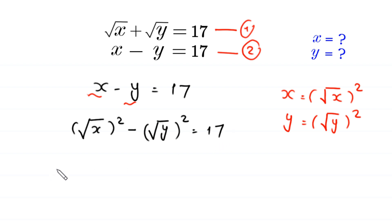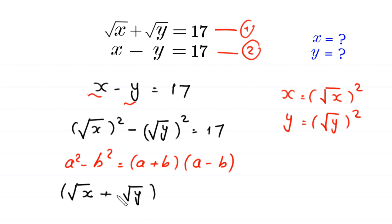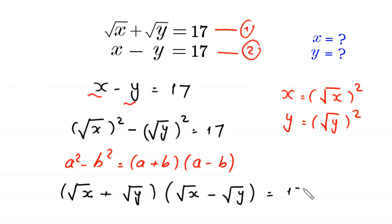Now, by using the algebraic identity a squared minus b squared equals a plus b times a minus b, we rewrite: square root of x squared minus square root of y squared becomes the quantity square root of x plus square root of y, times the quantity square root of x minus square root of y, equal to 17.